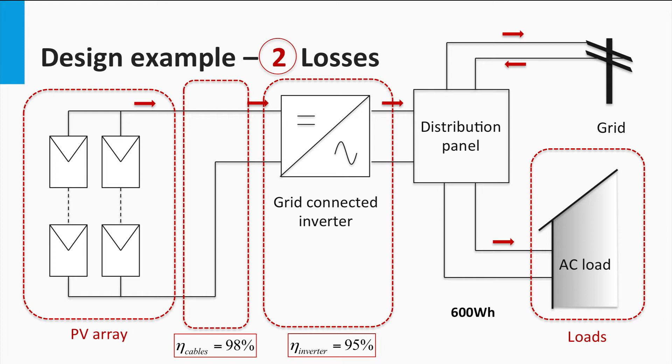That is, the cables have a transmission efficiency of 98% for the DC power, and the grid-tight inverter shows an efficiency of 95%. We also see that the AC load at the inverter end demands a total of 600 Wh during the day.